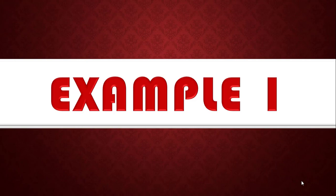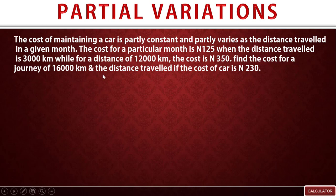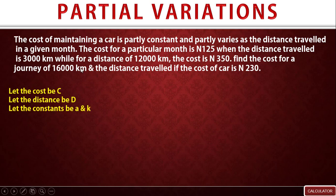Let's look at the first example on partial variation. Take your time to study the question. The cost of maintaining a car is partly constant — that is one statement — and partly varies as the distance traveled in a given month. Breaking this down: the cost of maintaining a car is partly constant, and partly varies as the distance traveled. We assume the cost of maintaining a car to be C, the distance traveled to be D, and the constants to be A and k.